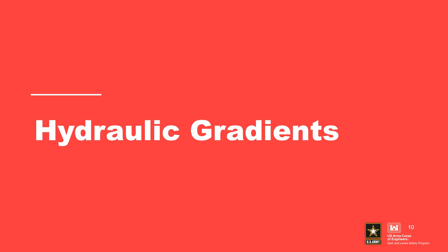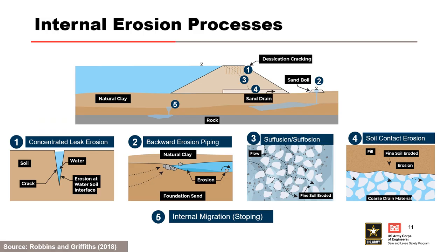Hydraulic gradients. As we have seen in this training course, the hydraulic gradient influences the likelihood of initiation, and in some cases progression, of each of the five internal erosion processes. For concentrated leak erosion, it is used to estimate hydraulic shear stress for initiation. For backward erosion piping, it includes vertical exit gradient for initiation and horizontal gradient for progression. For surface erosion, it includes exit gradient for initiation. For soil contact erosion, it is used to estimate Darcy velocity for initiation. For internal migration, a vertical downward gradient is required.